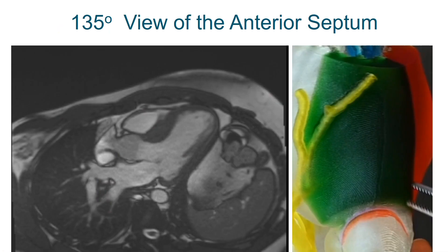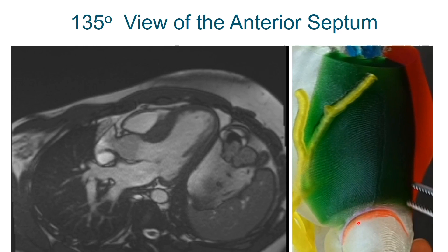In all my talks, I always start with emphasizing understanding the intraoperative transesophageal echo views — there are two specific views. These are MRI images, but they conform to the transesophageal echo. This would be the typical view at 135 degrees. You have the aorta, the mitral valve, the apex of the heart, and then this portion of the septum — the anteroseptum shown here — reflected in the green portion of the model with the RV free wall removed. Note that the anteroseptum lies right beneath the nadir of the right coronary cusp.